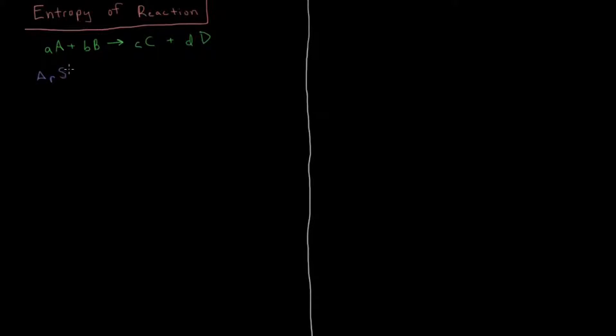So for this reaction, we'd have delta RS0, so this would be the standard molar entropy of reaction for this reaction. That would be D times the molar entropy of species D plus C times the molar entropy of species C. Those are products, so they have positive coefficients.